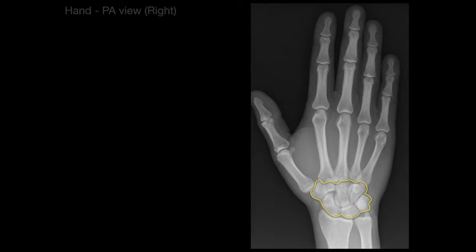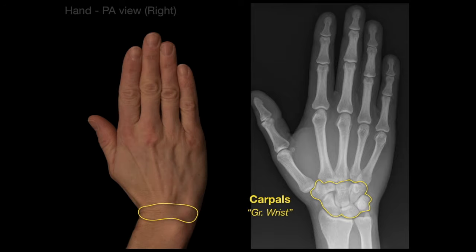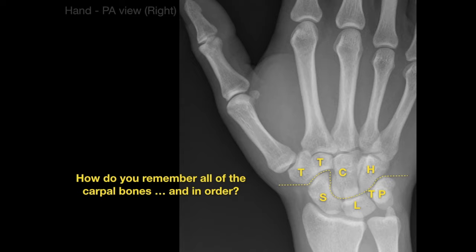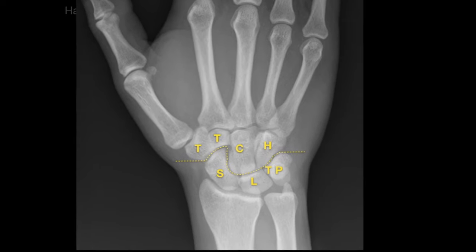There's a collection of bones called the carpals — carpals is Greek for wrist — and those are the wrist bones arranged in two rows of eight bones: four proximal carpal bones and four distal carpal bones. To remember all the carpal bones in order, I use the mnemonic: Sally left the party to take Kathy home.